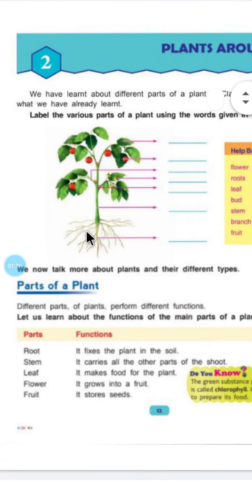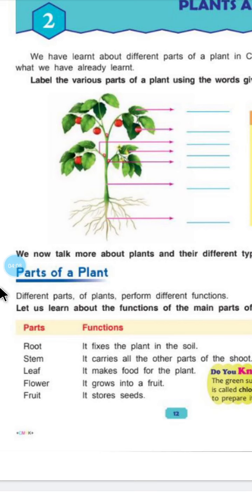Plants have different parts. There are so many parts in a plant: leaf, fruit, branches, flowers, bud, stem, and roots. Now next, we will discuss the different parts of a plant and their functions. Plants के different different parts का क्या क्या function है? What are the functions of the main parts of a plant?